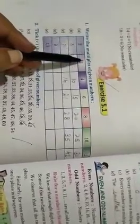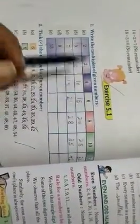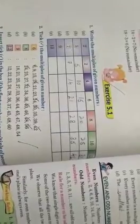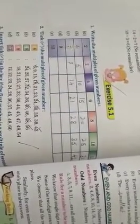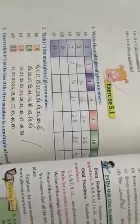Now we start exercise 5.1. Write the multiples of given number. As we learn, according to definition, a multiple of a number is the product obtained when the given number is multiplied by the same or any other numbers. So we have to find multiples of 5.